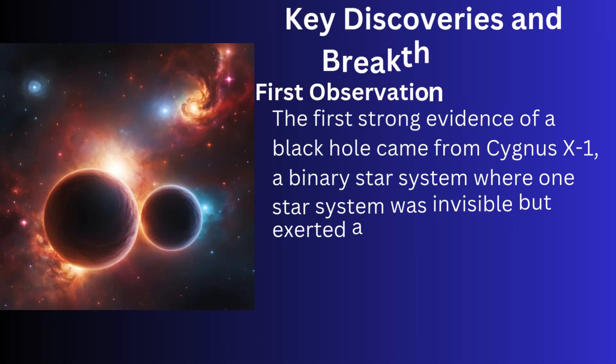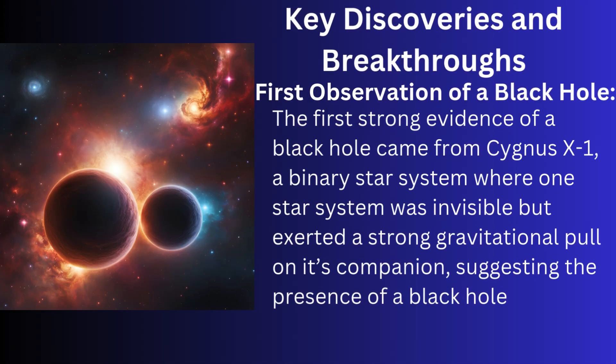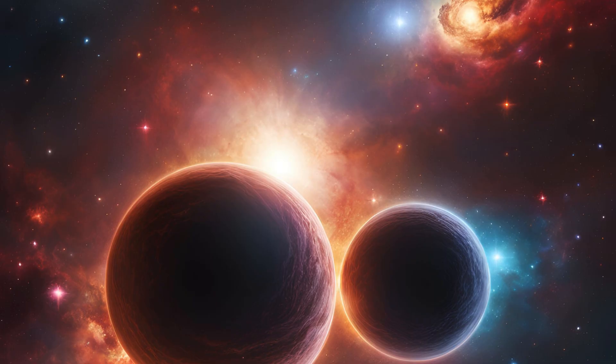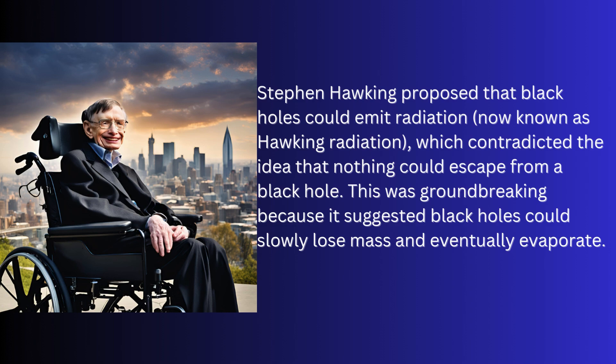Now let's discuss key discoveries and breakthroughs. The first strong evidence of a black hole came from Cygnus X-1, a binary star system where one star was invisible but exerted a strong gravitational pull on its companion, suggesting the presence of a black hole. Stephen Hawking proposed that black holes could emit radiation, now known as Hawking Radiation. This contradicted the idea that nothing could escape from a black hole, and was groundbreaking because it suggested black holes could slowly lose mass and eventually evaporate. This was proposed in 1974.